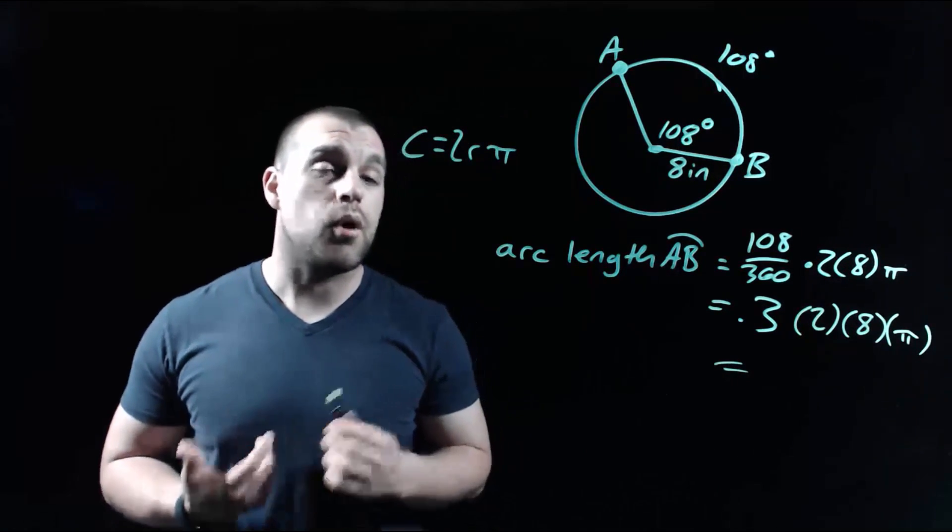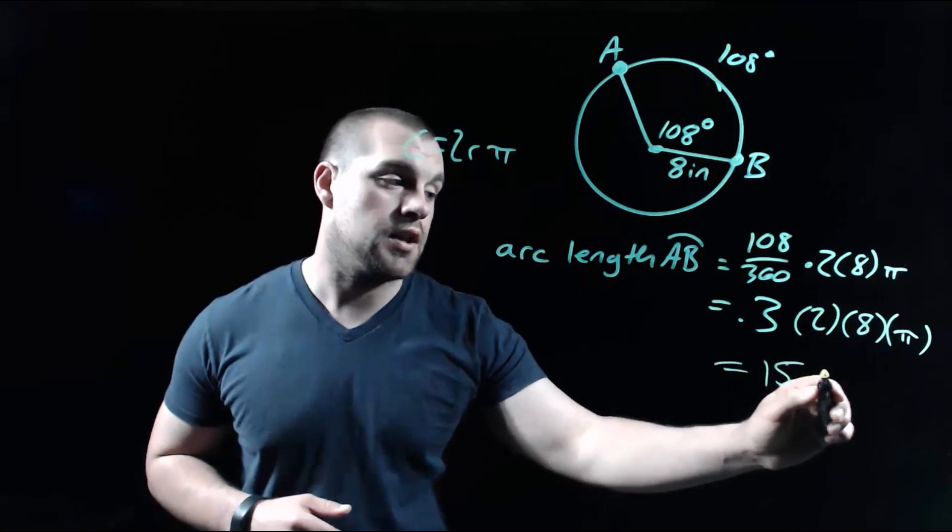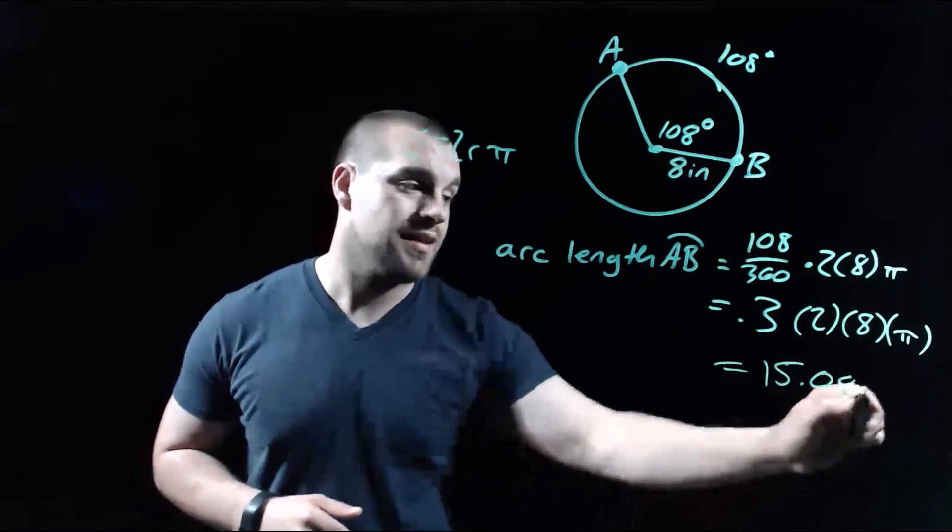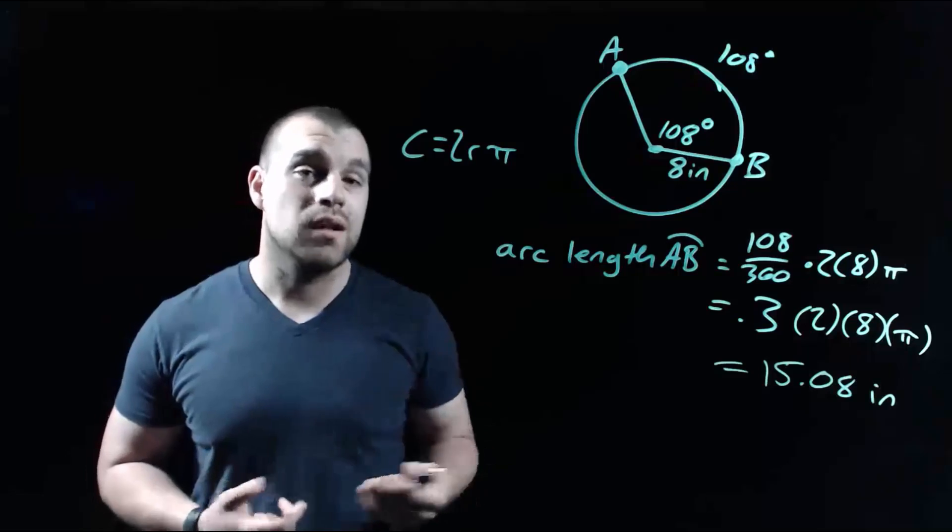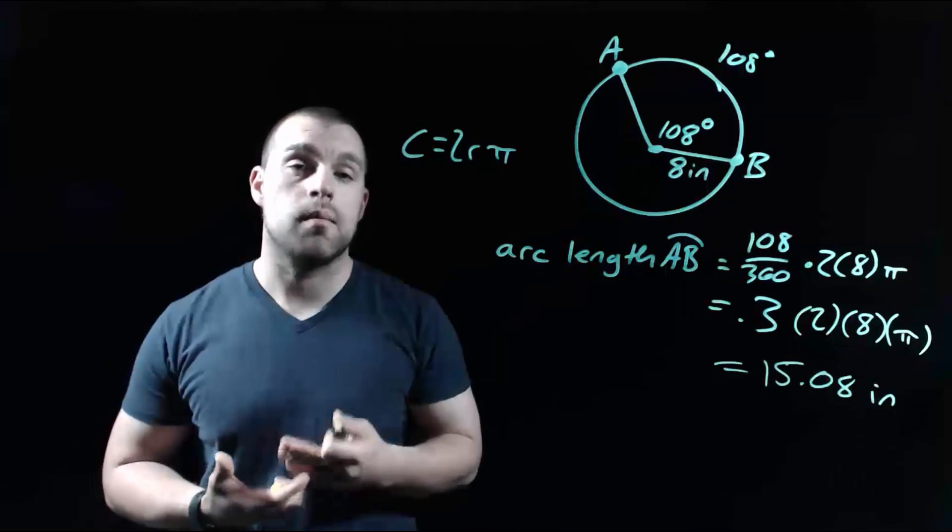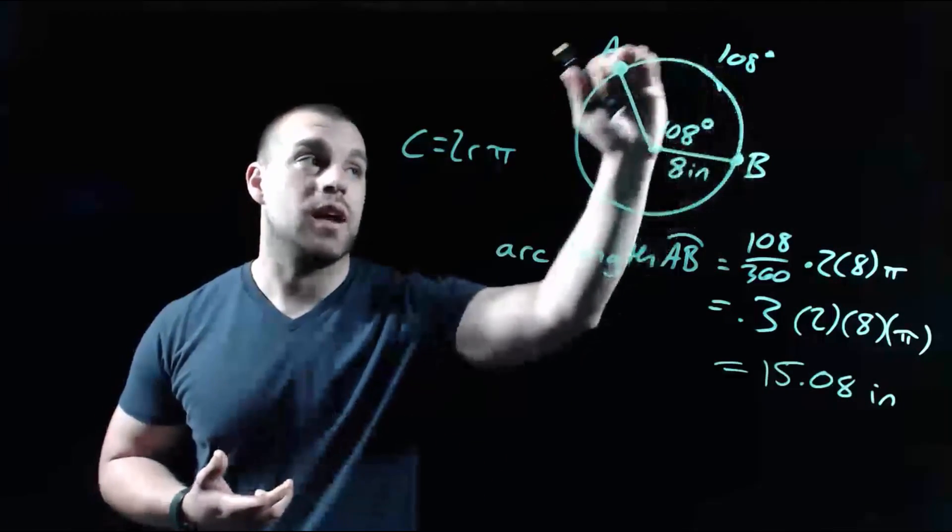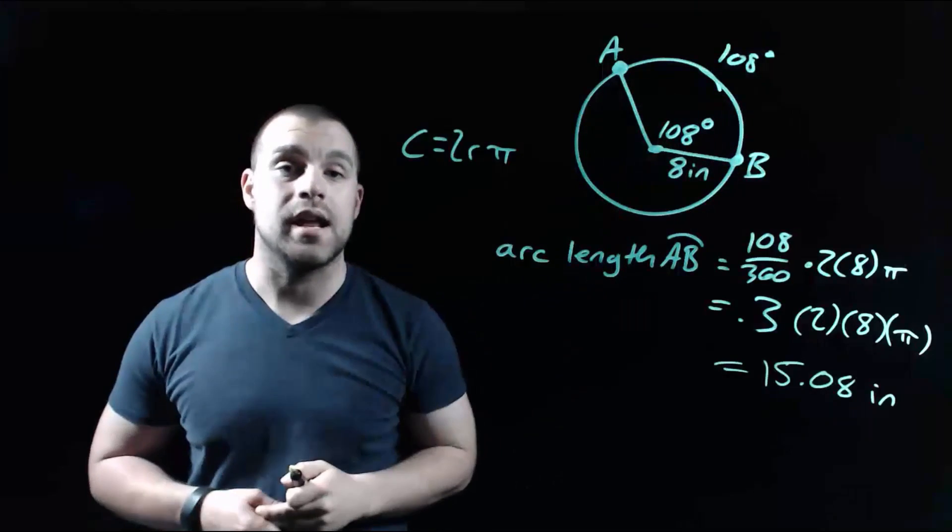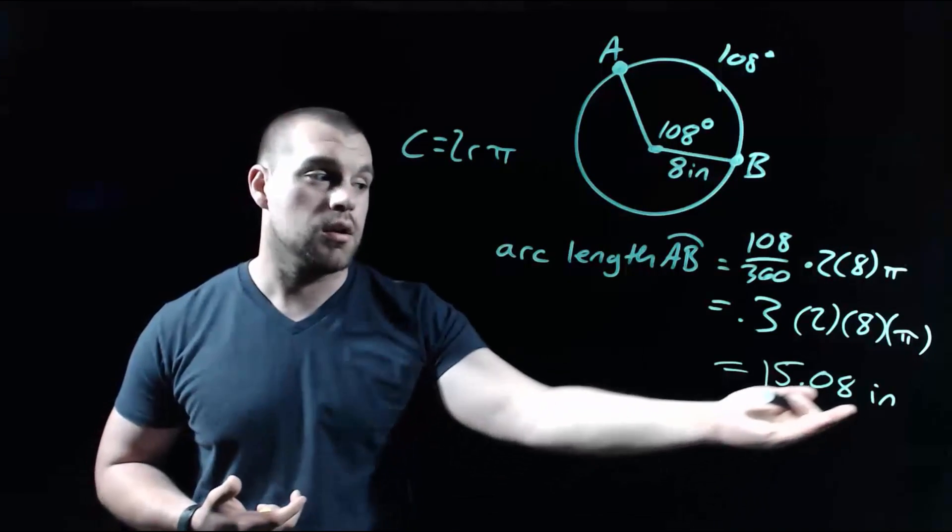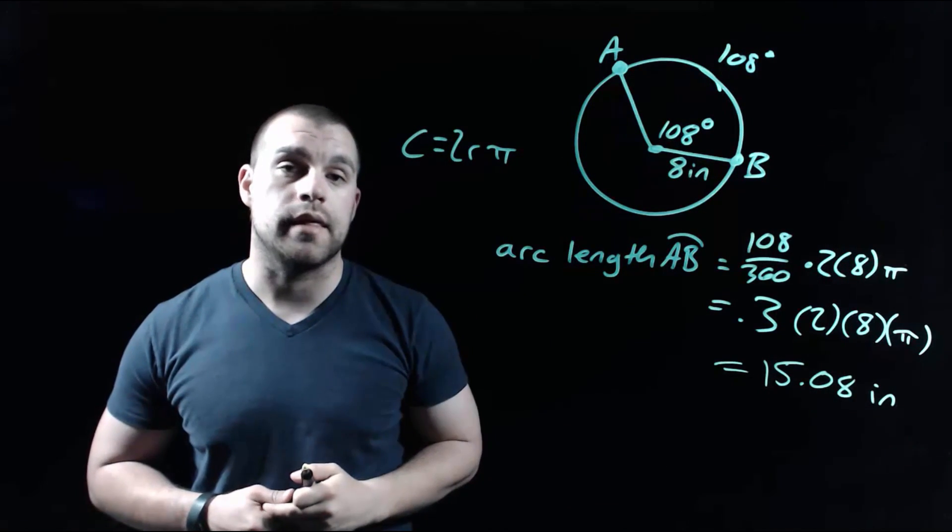So when we type all of that into our calculator, we should get about 15.08 inches. And we do need to label this because it is an actual length that we're measuring. It's the distance along the outside of the circle from point A to point B, the length of that arc. So we need to put our inches label on there.